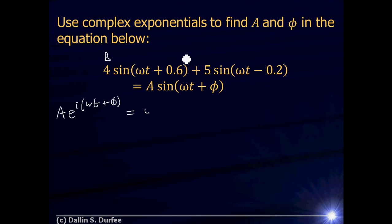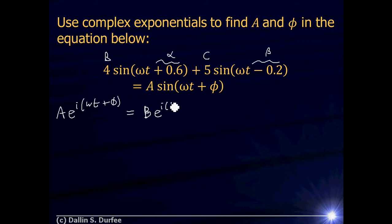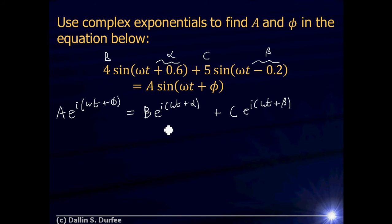I hate putting in numbers right away because you tend to drop things, so I'll call the amplitudes B and C, the phase shifts alpha and beta. So beta equals minus 0.2 and alpha equals plus 0.6. The right-hand side becomes B times e to the i(omega t + alpha) plus C times e to the i(omega t + beta). Again, this is not equal to that, but the imaginary part is. So if this equation is true and I find A and phi, it will be the same A and phi I'd find solving the original equation.